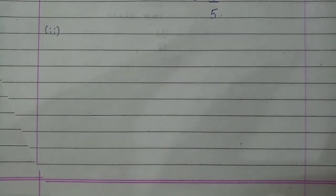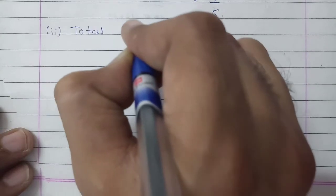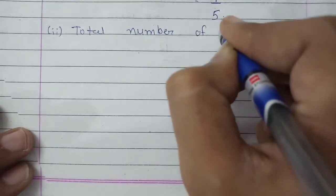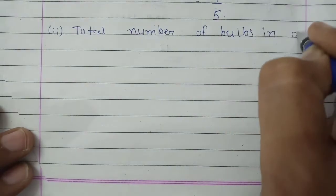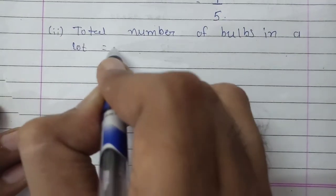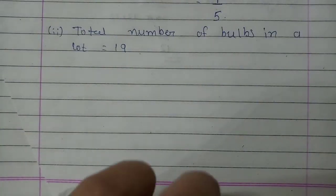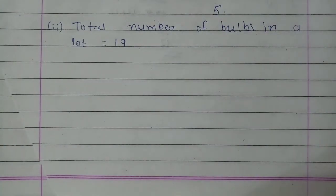In the second part, suppose the bulb drawn in the first question was a good (non-defective) one, and it was not put back into the lot. So now the total number of bulbs remaining in the lot is 19, because we removed one non-defective bulb and did not replace it.